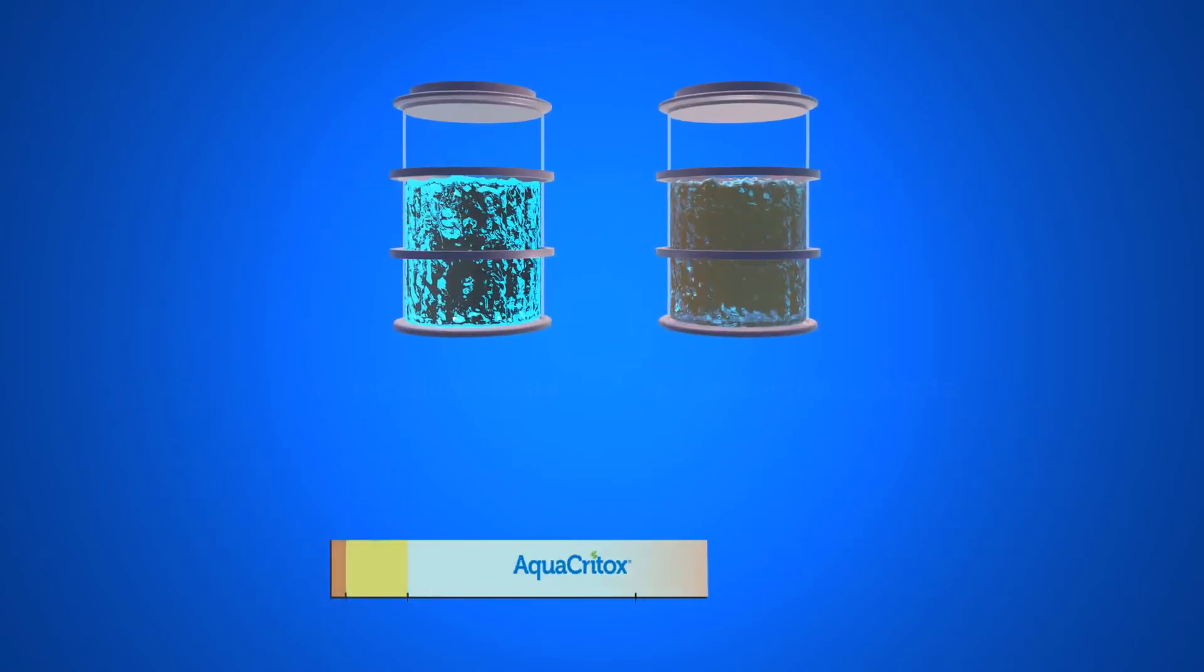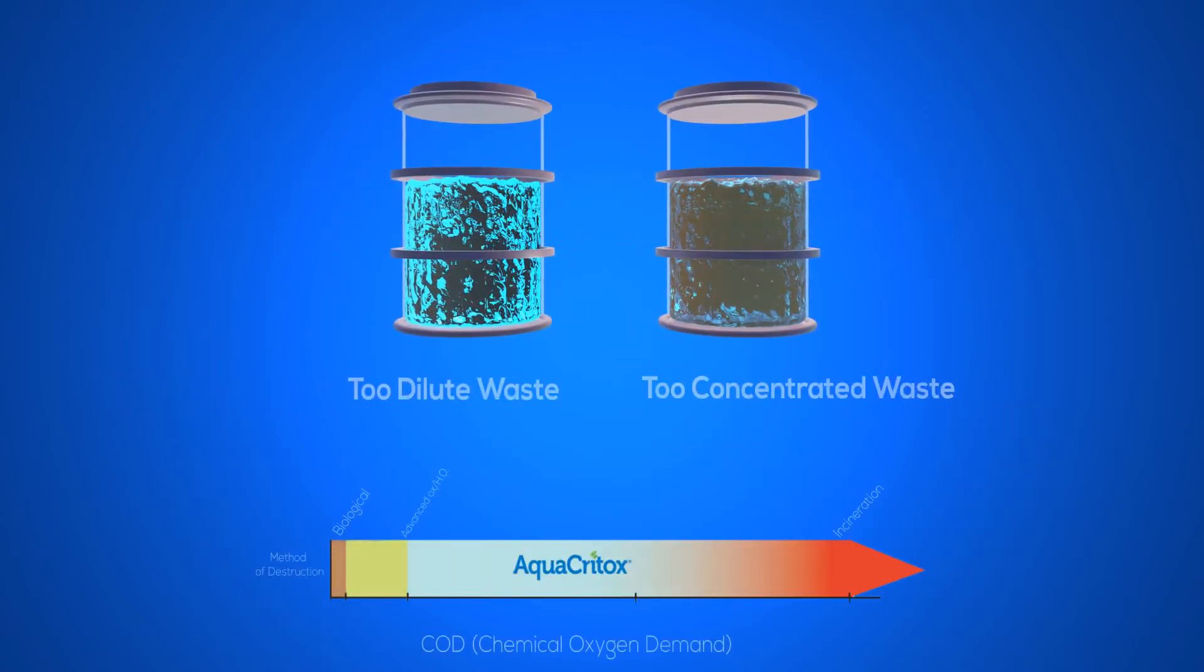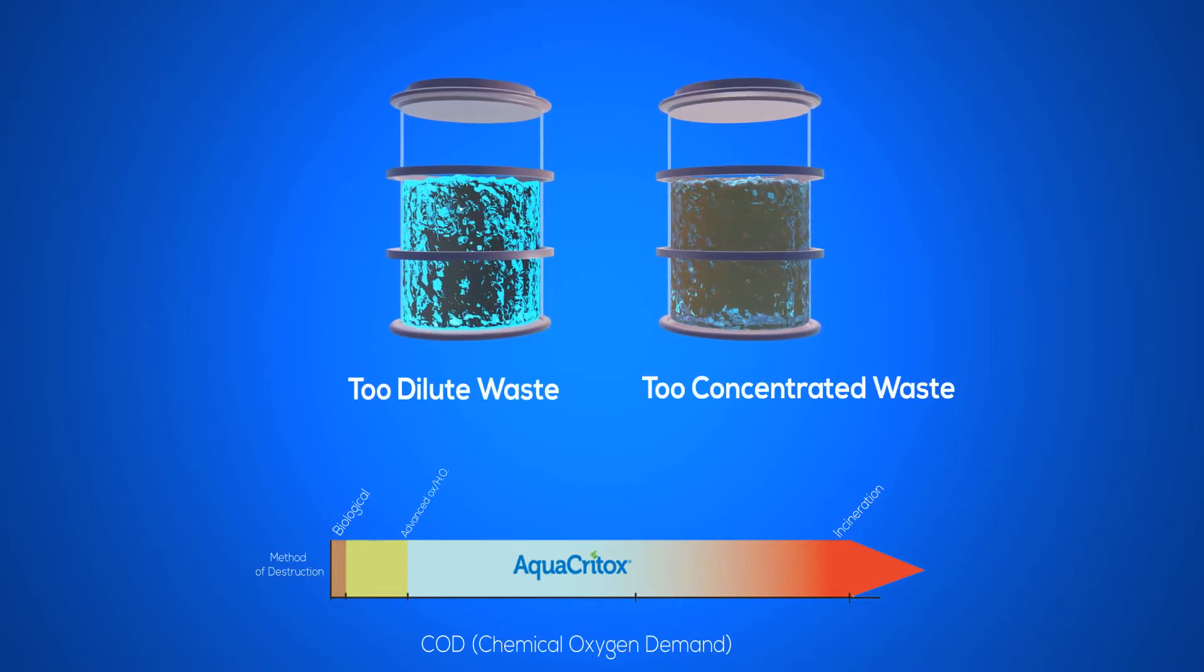AquaCritox is designed for the treatment of waste streams that are considered to be too dilute to incinerate or too concentrated or too toxic for biological treatment.